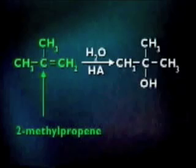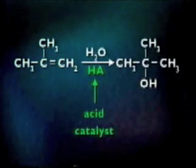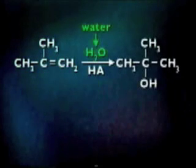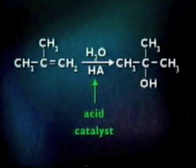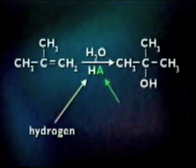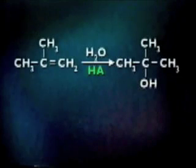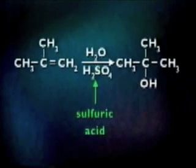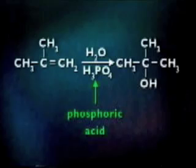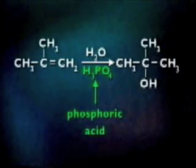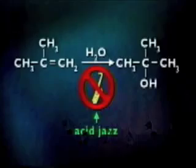We've got 2-methylpropene, an acid catalyst, and water. The acid catalyst is represented by HA — H is hydrogen, and A can be almost anything. Most of the time, the acid catalyst used will be sulfuric acid, H2SO4, or phosphoric acid, H3PO4. However, the catalyst is never acid jazz.